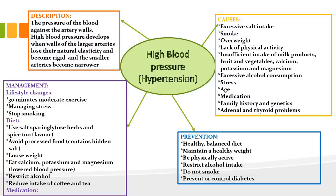Diet-related management of high blood pressure: use less salt — instead use herbs and spices to flavour food. Avoid processed foods as they contain hidden fats and salts. Lose some weight. Eat more calcium, potassium and magnesium as they lower blood pressure. Restrict alcohol intake. Reduce your intake of coffee and tea. You can also manage it by taking medication, though no one wants to be on chronic medication — you would rather prevent it before reaching that point.